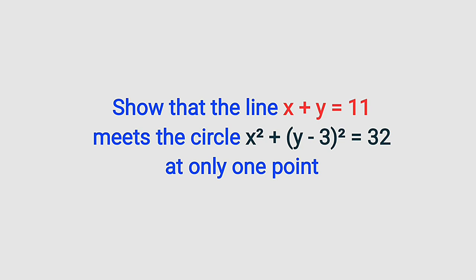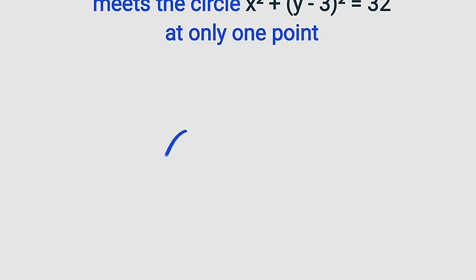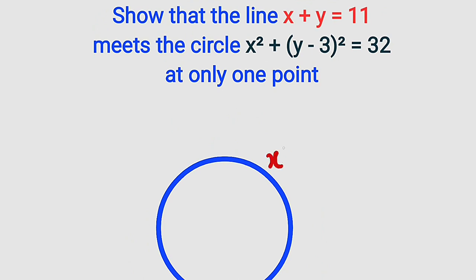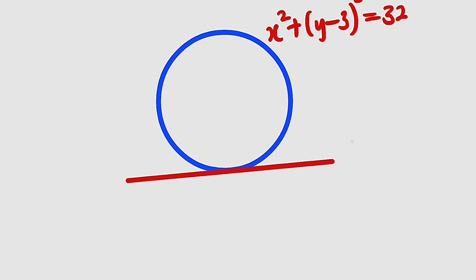Before we start, let me interpret this question for you. Suppose we have a circle like this. Any line that will meet this circle at exactly one point is said to be a tangent. So let us draw a tangent line like this. This circle has the equation x squared plus y minus 3 whole squared equal to 32, and the tangent has the equation x plus y equal to 11.